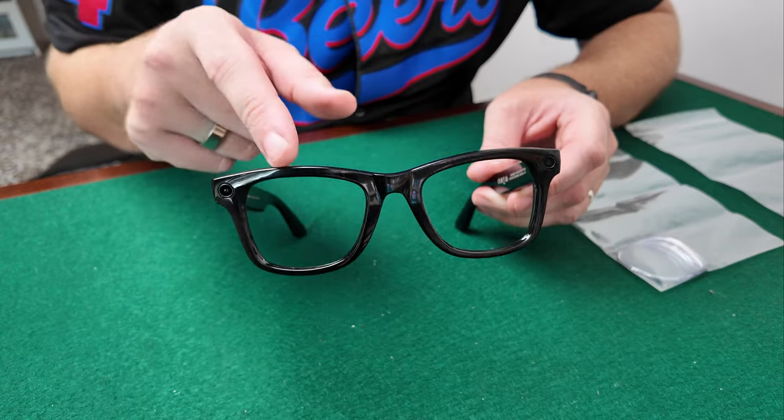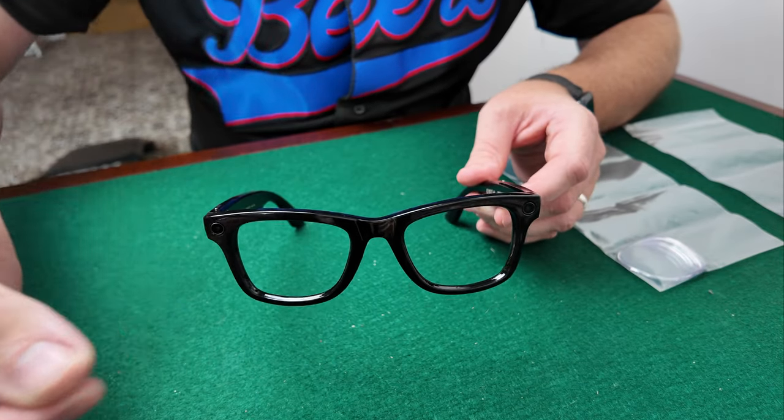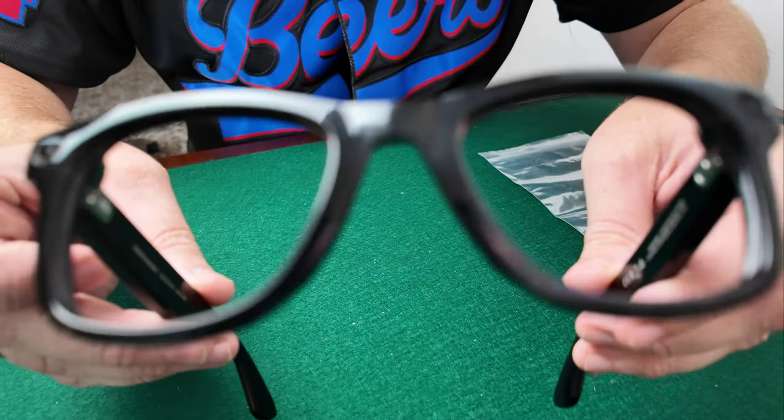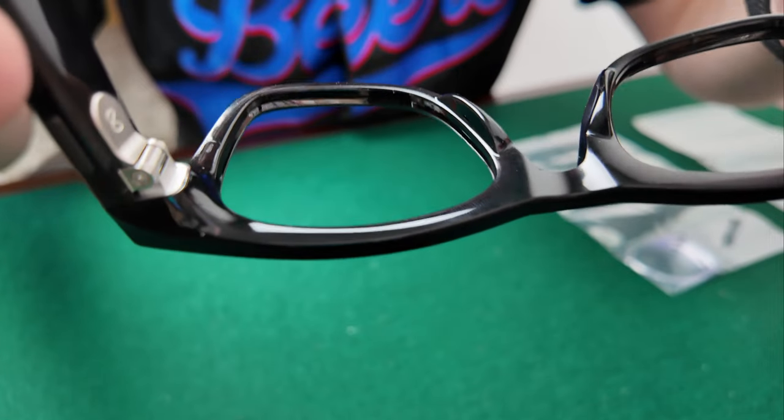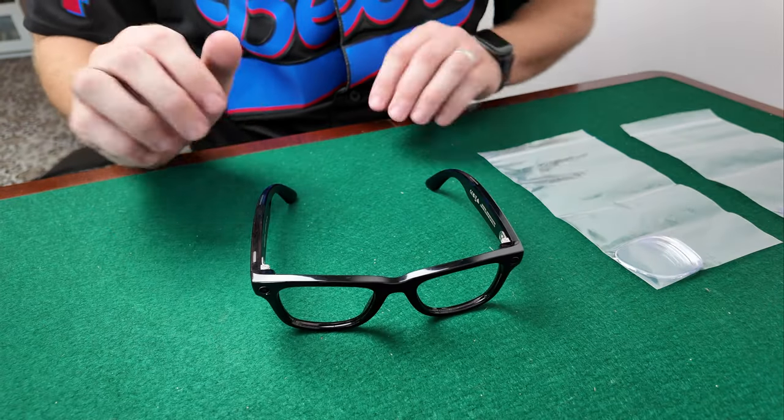The process to fit new lenses in these glasses is similar to how you take them out. They're going to be put in through the front, just clicking into place. As you can see, they have a little divot in the frame, and that's where the lens is going to sit. We'll get them fitted now.